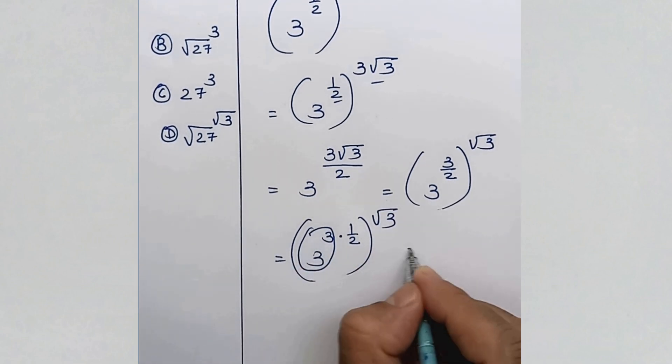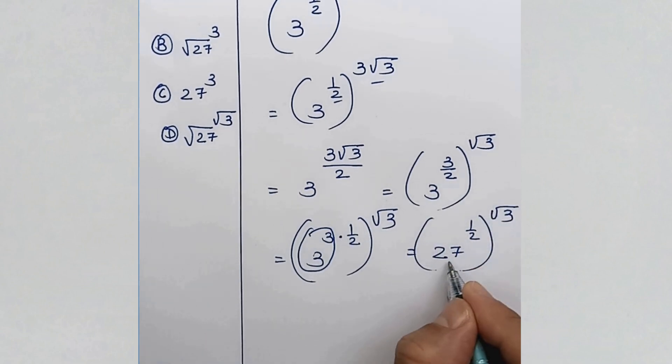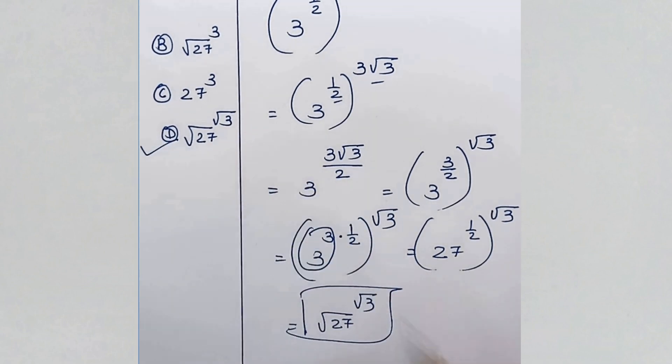3 cube is 27. 27 to the power 1 over 2 is square root 27 to the power square root 3. Option D is the answer.